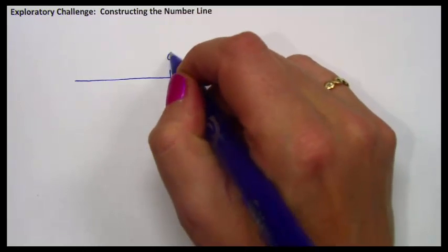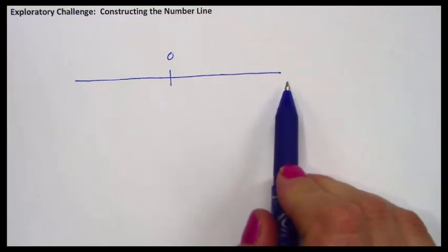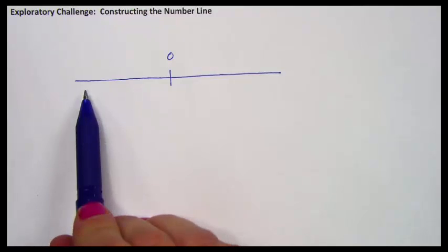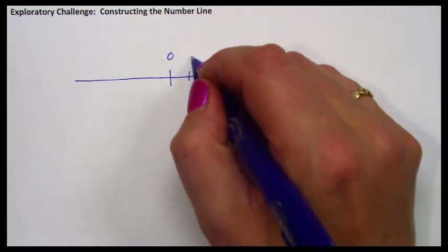They have a zero in the middle, and then they have some positive numbers to the right and some negative numbers to the left, often counting by ones.